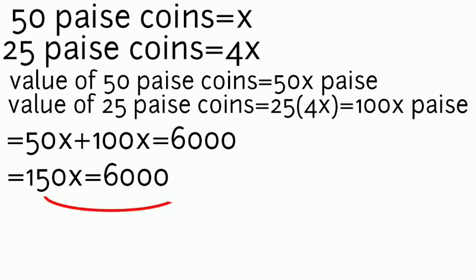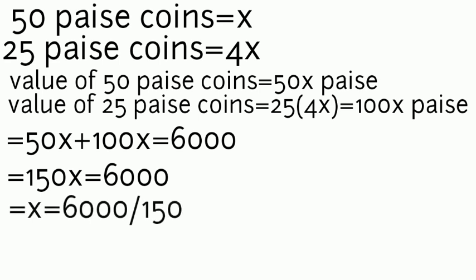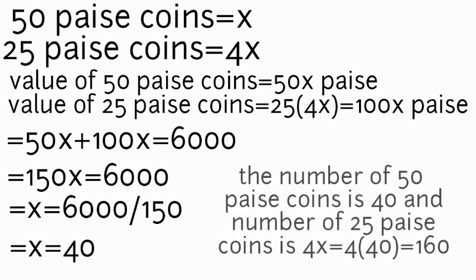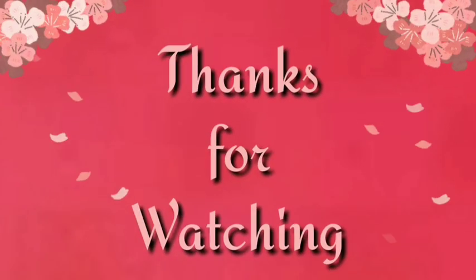Bringing 150 to the other side, x = 6000 ÷ 150 = 40. Hence the number of 50 paise coins is 40, and the number of 25 paise coins is 4 × 40 = 160. Thank you friends, meet you tomorrow, bye.